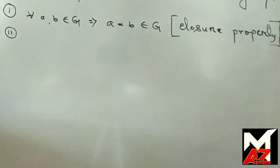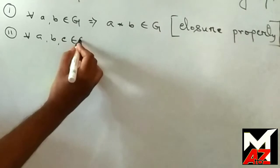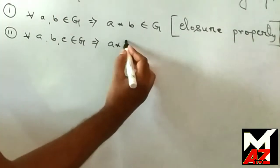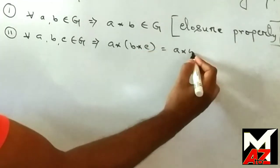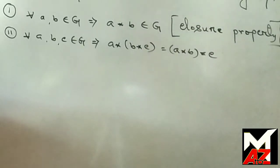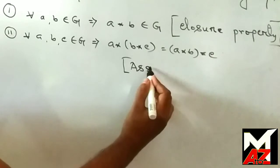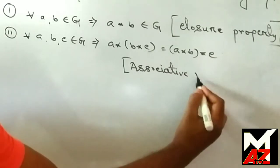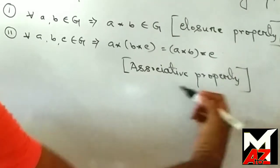Property 2: for all A, B, C belonging to G, A star (B star C) equals (A star B) star C. This property is called the associative property.